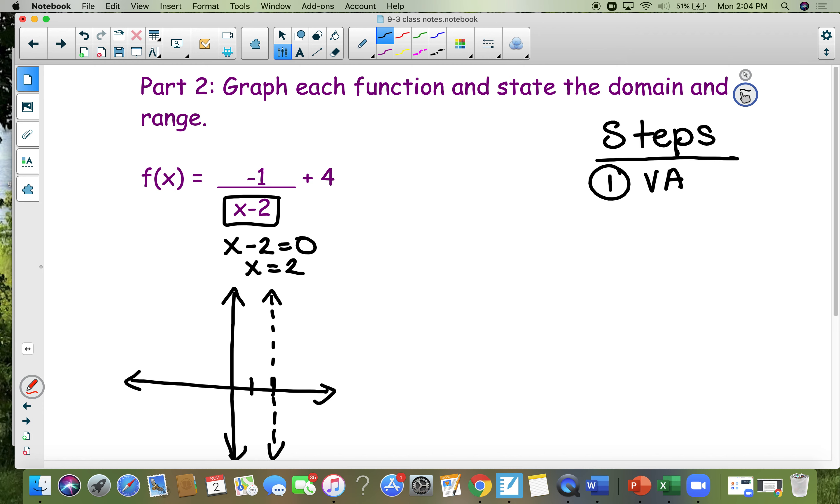Second step, locate your horizontal asymptote plus 4. So you're going to go up 1, 2, 3, 4 and put a horizontal line right there. That's your HA.